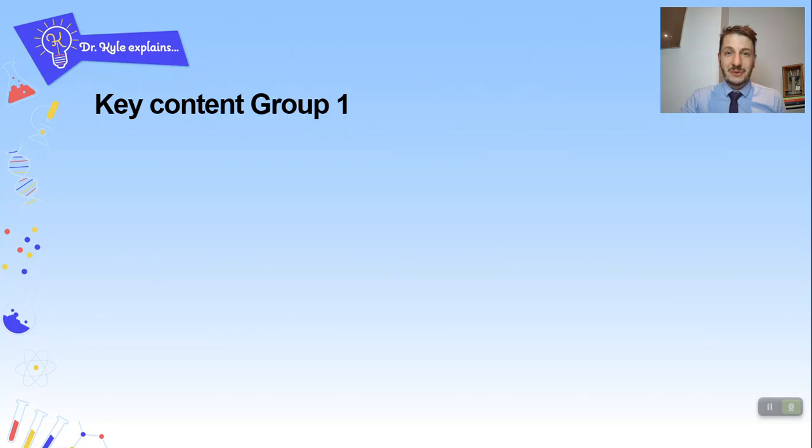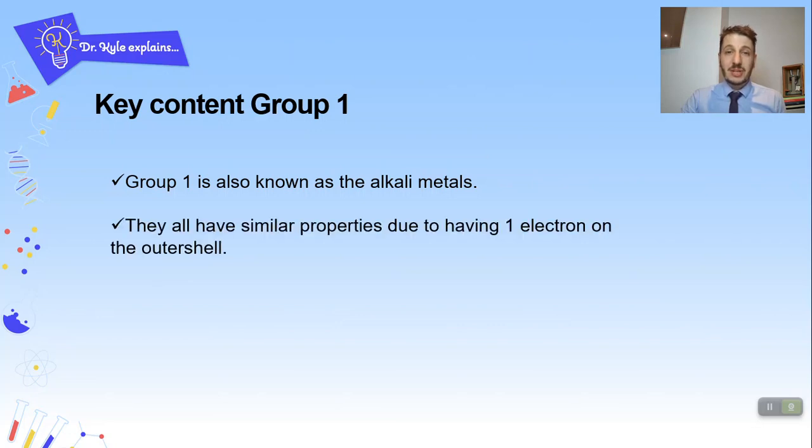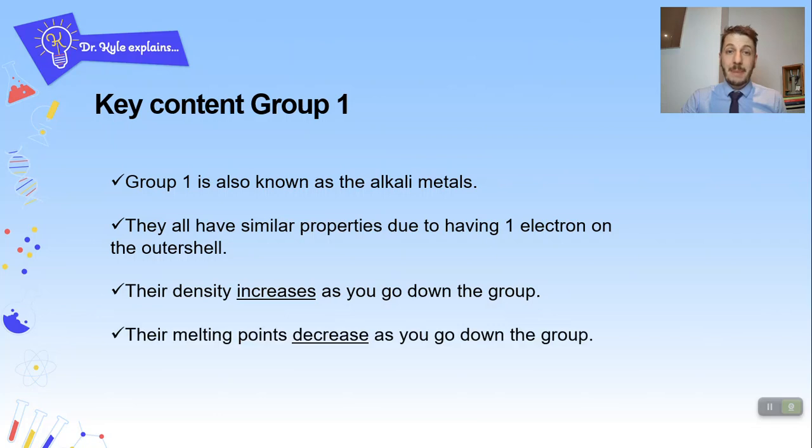Okay, so first of all some key content for Group 1. Group 1 is also known as the alkali metals. They all have similar properties due to having one electron on the outer shell. Their density increases as you go down the group. Their melting points decrease as you go down the group.